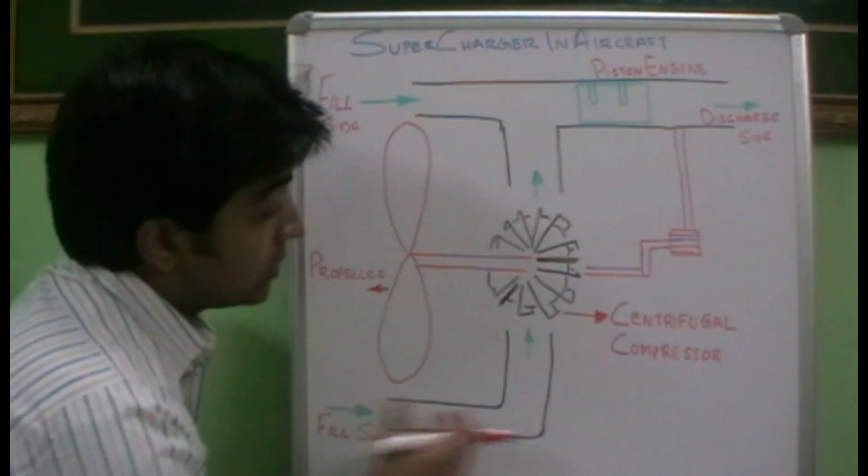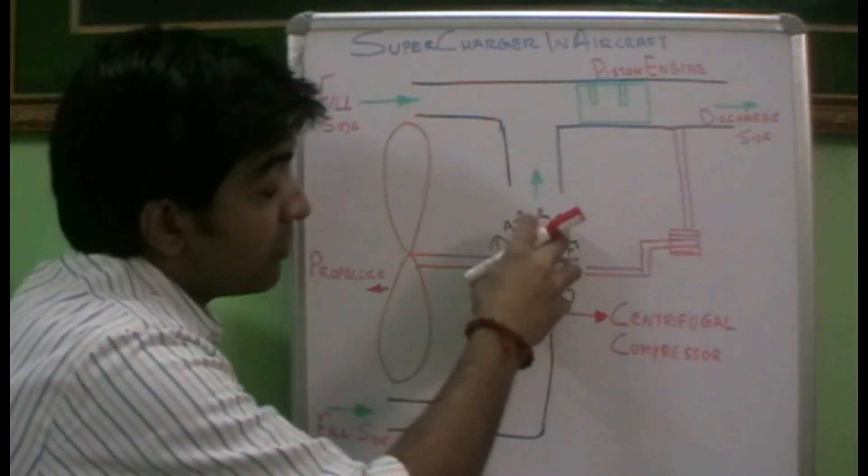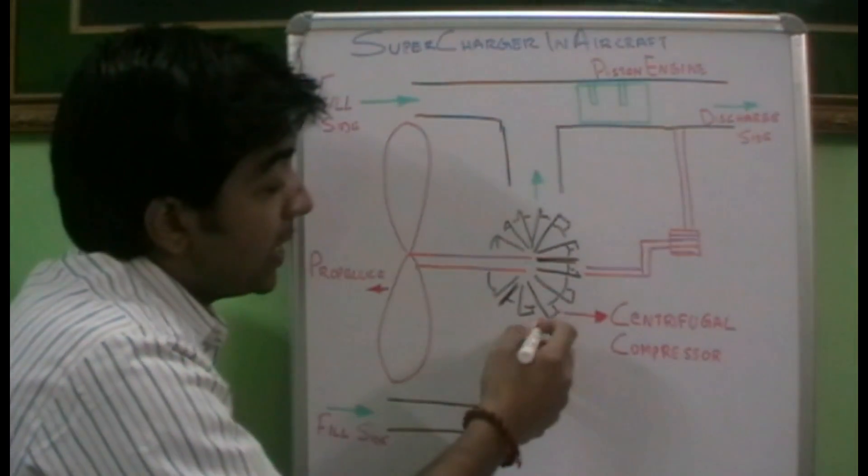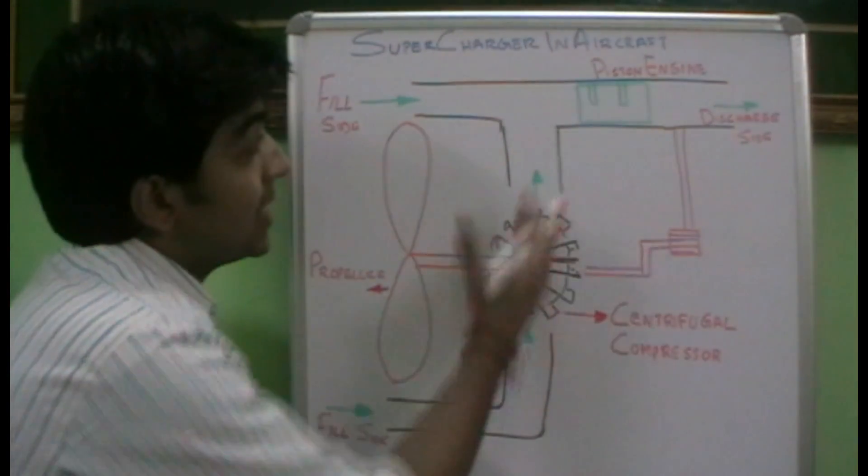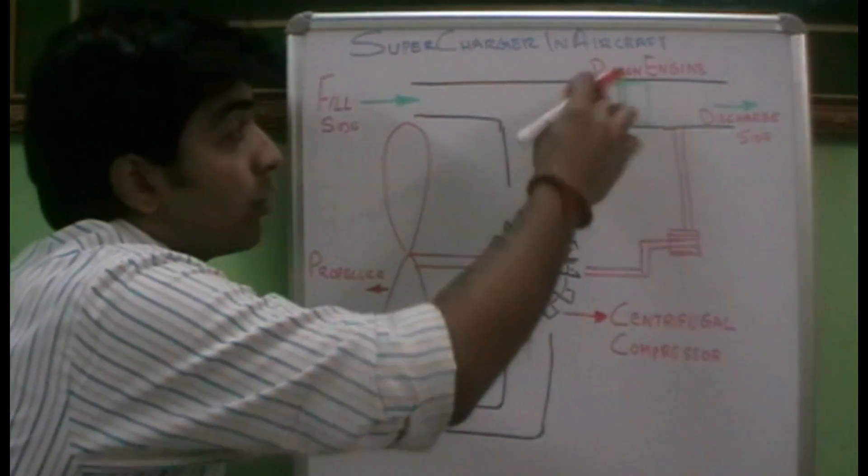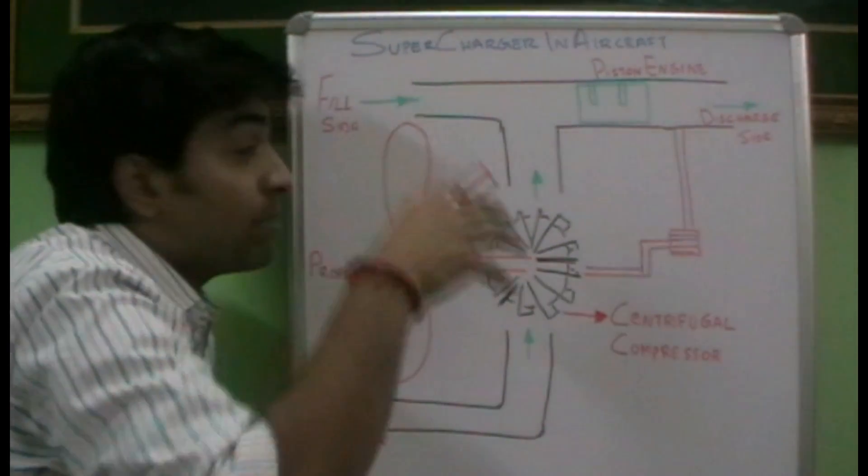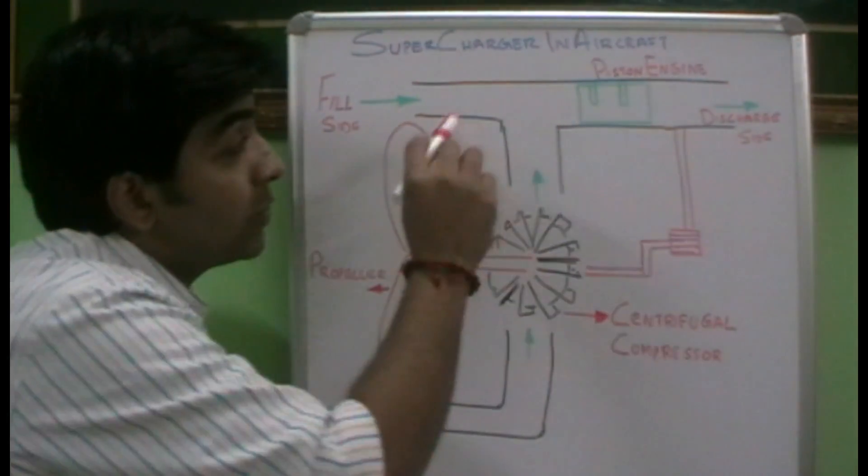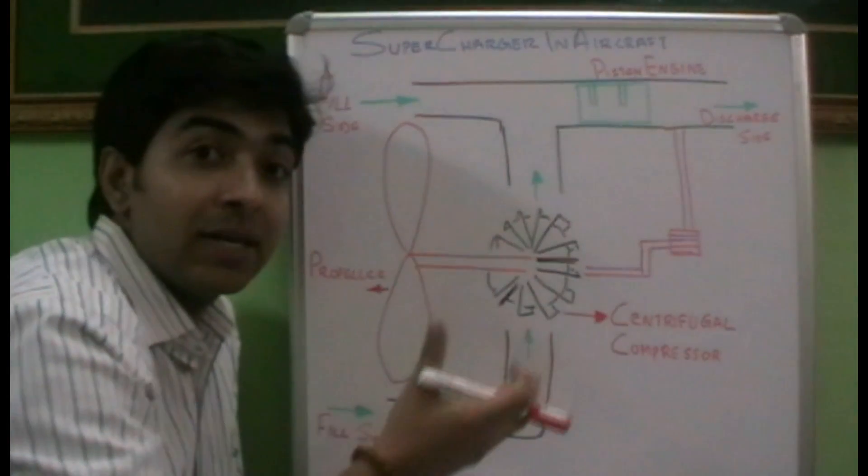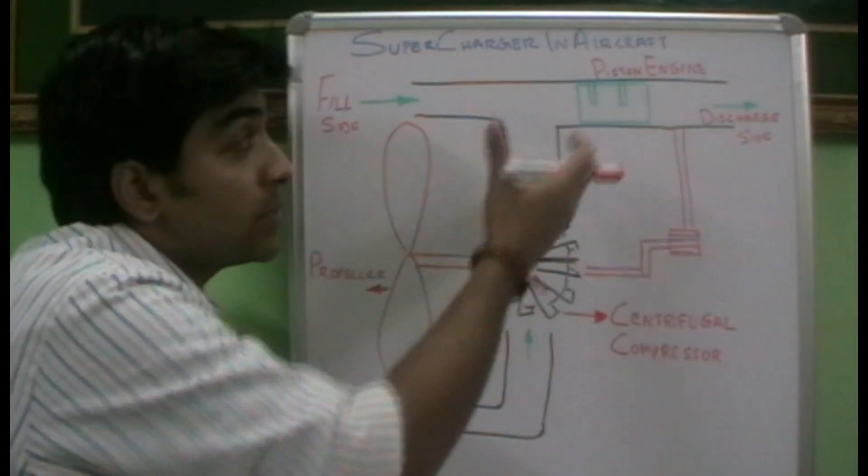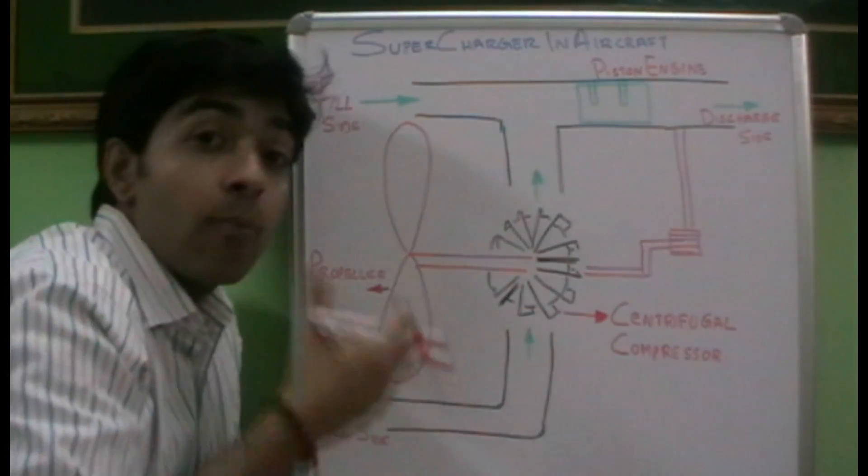This is the fill side. The air has been sucked in here and the centrifugal compressor actually compresses more quantity of air, which is supplied to the inlet manifold of the piston engine. More compressed air is supplied to the inlet manifold, which helps the piston engine to produce more combustion.